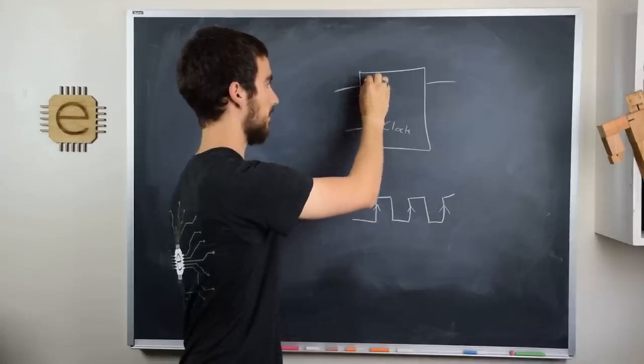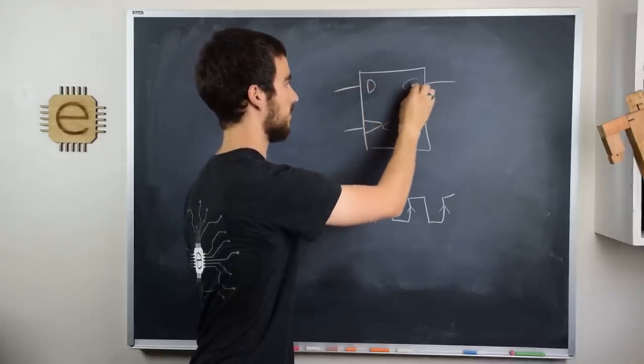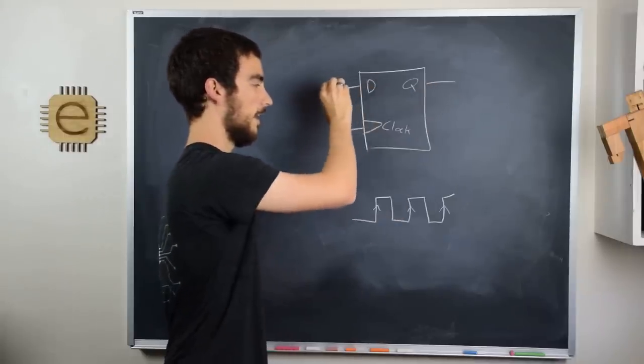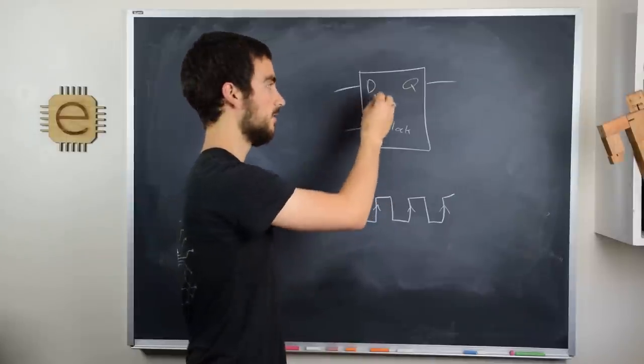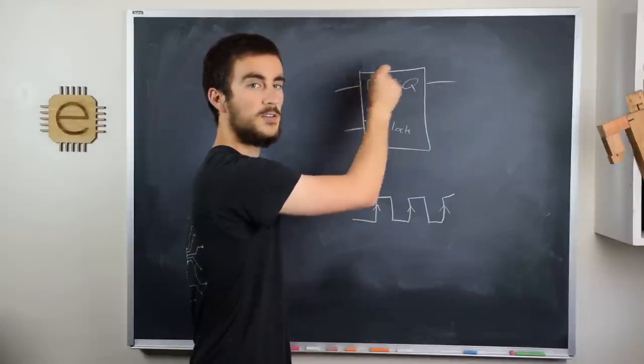The other input on the flip-flop is known as the D input, and the output is known as Q. And when the clock transitions from low to high, so on the rising edge, the flip-flop copies the value from D to the value of Q.